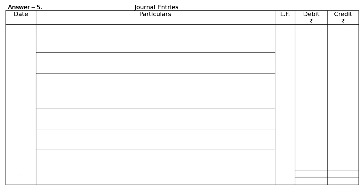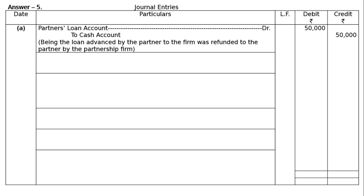This is question 5. We have to pass journal entries for the following transactions at the time of dissolution of the firm. Part A: A partner's loan of rupees 10,000 advanced by a partner to the firm was refunded. The entry is: Partner's Loan Account debited to Cash Account, being the loan advanced by the partner to the firm refunded to the partner by the partnership firm, amount rupees 50,000.